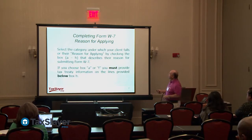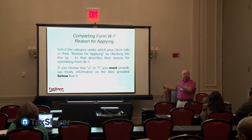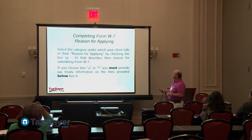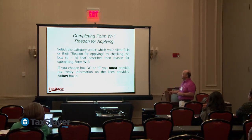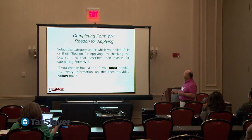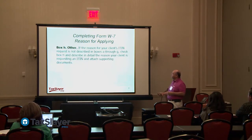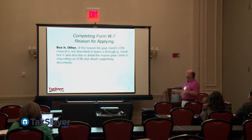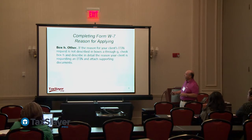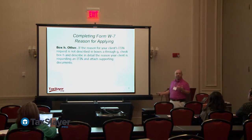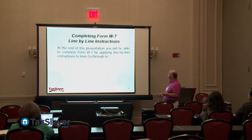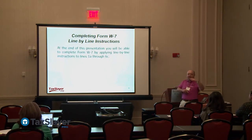Select the category your client falls under — we'll go through this when we do the tax return and complete the W-7. For the reason for applying, check the appropriate box. If you choose box A or F you must provide tax treaty information; most won't be A or F. Box H is 'other' — if the reason isn't described in boxes A through G, use H and provide detail. That'll be rare since the first seven should cover most situations.